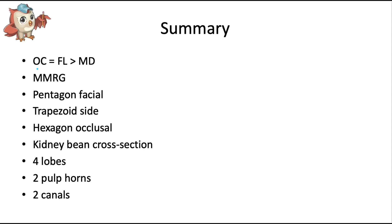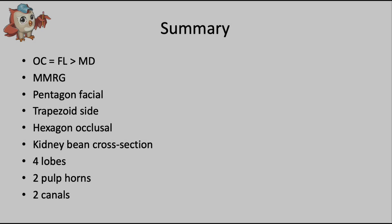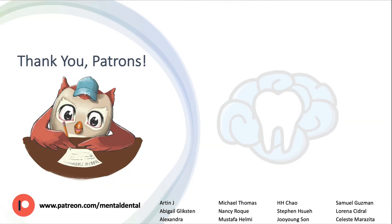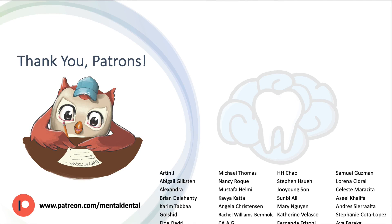Summary of the maxillary first premolar: the occluso-cervical height and facial-lingual dimension of the crown are very similar — essentially equal — with the mesial-distal dimension being the smallest. The mesial marginal ridge groove is a key landmark. It looks like a pentagon from the facial view, a trapezoid from the side view, a hexagon from the occlusal view, and has a kidney bean cross-section. It normally consists of four lobes, two pulp horns, and two pulp canals.